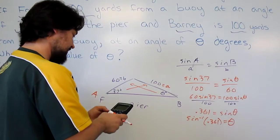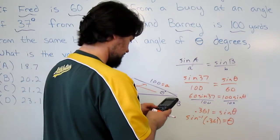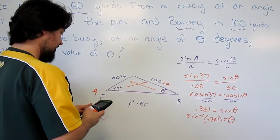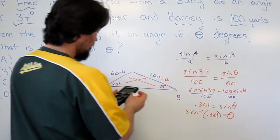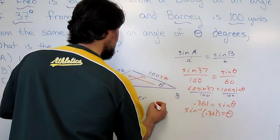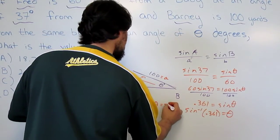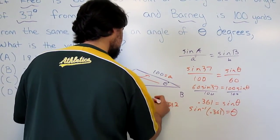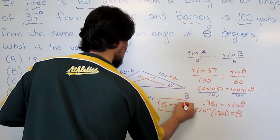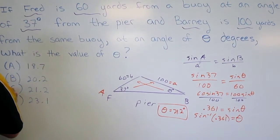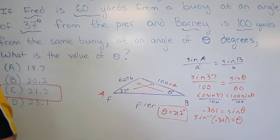Second sine. And we get 21.17. So theta equals 21.2 degrees. There we are. Answer is C.